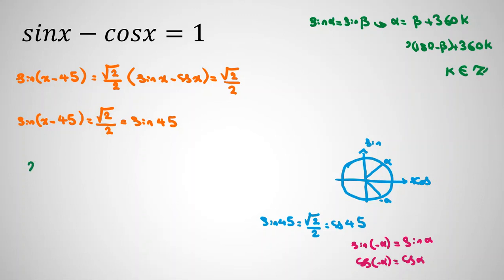Now here we can say x minus 45 is 45 plus 360k. And the other part is 180 minus 45, plus 360k, which k is integer.